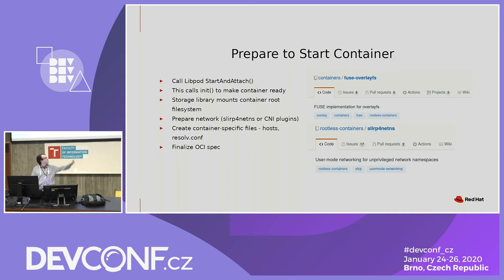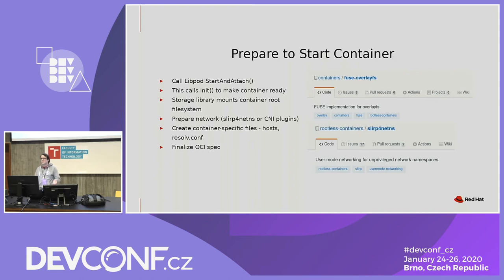Unfortunately, rootless doesn't have the ability to make many mounts, so we cannot use kernel overlayfs. The solution here is fuse-overlayfs, which was developed by Giuseppe. Fuse-overlayfs is a reimplementation of kernel overlay in user space, so we can use it without privileges — which is pretty neat. It's going to do roughly the same thing, but via fuse.